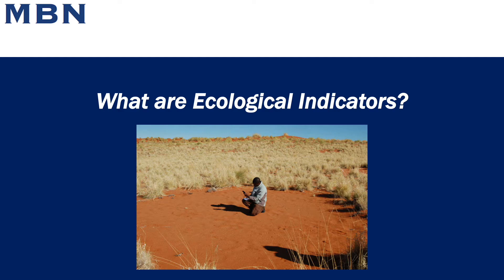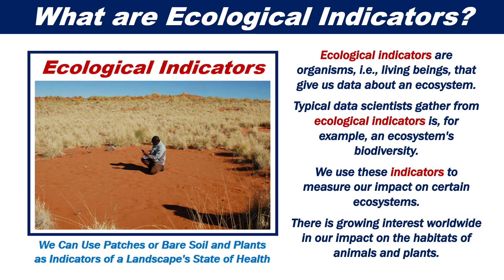What are ecological indicators? Ecological indicators are organisms, that is, living beings that give us data about an ecosystem. Typical data that scientists gather from ecological indicators is, for example, an ecosystem's biodiversity. We use these indicators to measure our impact on certain ecosystems.